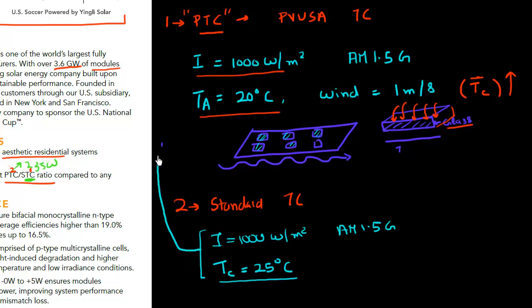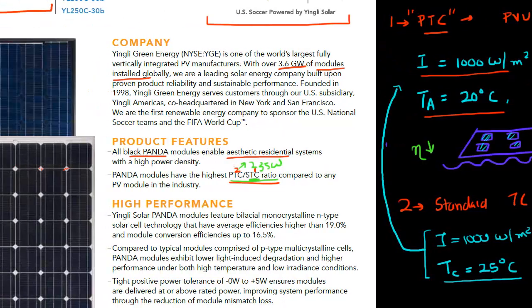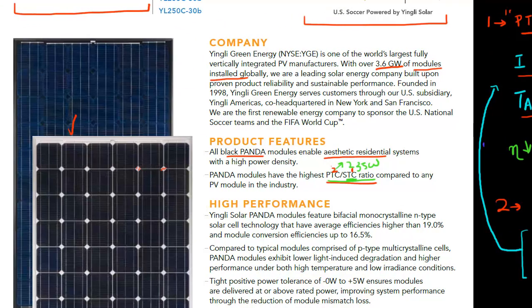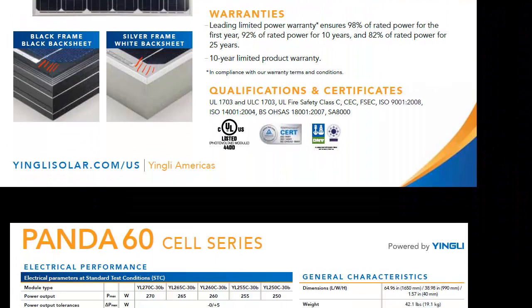So we know that whenever we operate the cell, and if you operate it under this PTC condition, the temperature of the cell will rise because you have this light shining and also the cell is essentially thermally sealed by this glass from the top. So this efficiency of the cell will decrease as I increase the temperature. So this efficiency will decrease in the PTC test condition. So that's why this PTC to STC ratio is important.